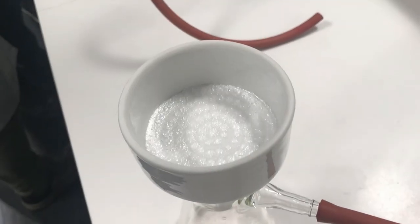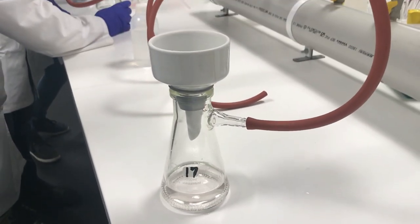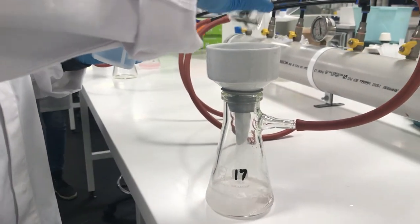Once the solution has fully cooled, place clean filter paper into a Buchner funnel. Dampen the filter paper before filtering the cooled mixture using the vacuum filtration method.